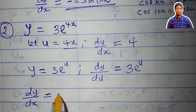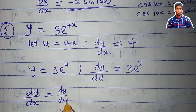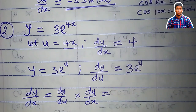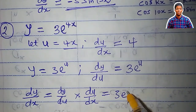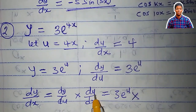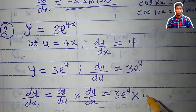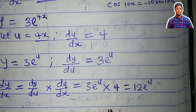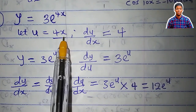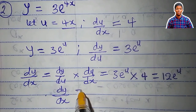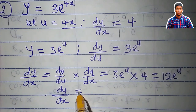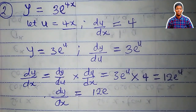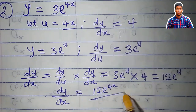So what is dy/dx? Going by the chain rule formula: dy/dx = dy/du times du/dx. dy/du is 3e^u, and du/dx is 4. This equals 12e^u. Remember u is equal to 4x, so finally dy/dx is equal to 12e^(4x).